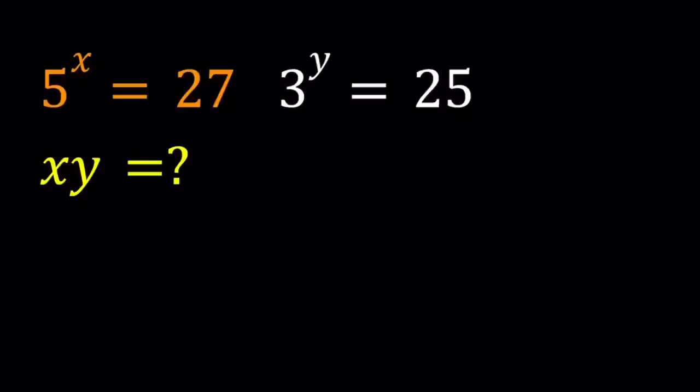Hello everyone. In this video we're going to be working with an exponential system. We have 5 to the power x equals 27 and 3 to the power y equals 25. And we're supposed to evaluate xy. So we're going to be finding a numerical value for x times y. I'll be presenting two methods but I'll probably show you the third one as well. Let's start with the first method.